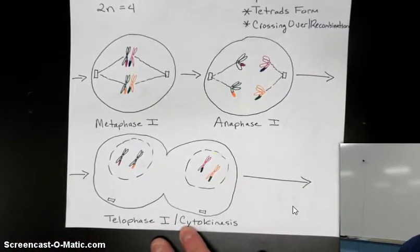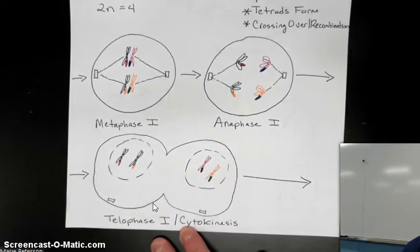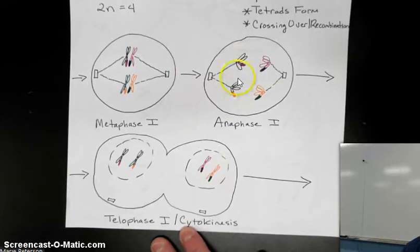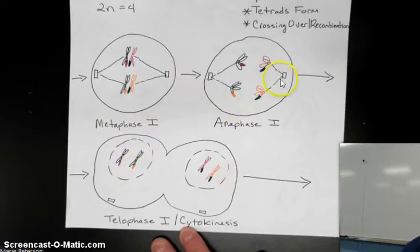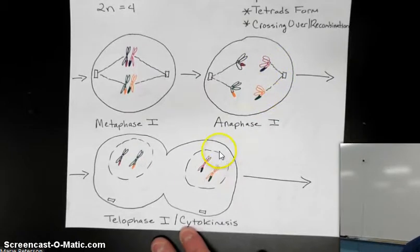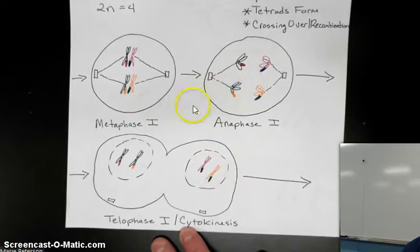The next stage is telophase I slash cytokinesis. In telophase I slash cytokinesis, we have the sister chromatids in each cell. This one is the black one and this one is the green one with the orange — those are the colors in this nucleus in this color-coded diagram. The pink and primarily orange chromosomes are going to end up in that nucleus together, because these two are going to this side of the cell, and the other two are going to that side.